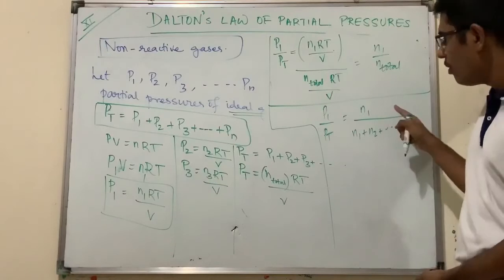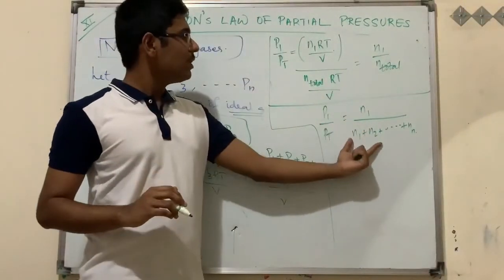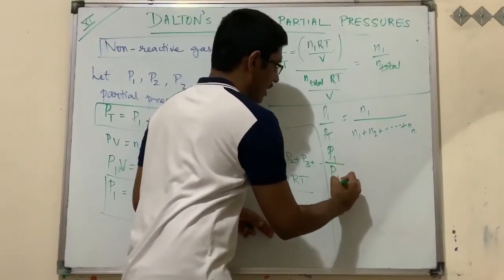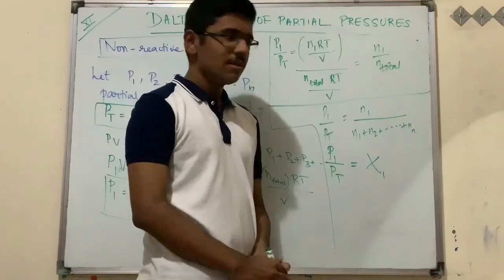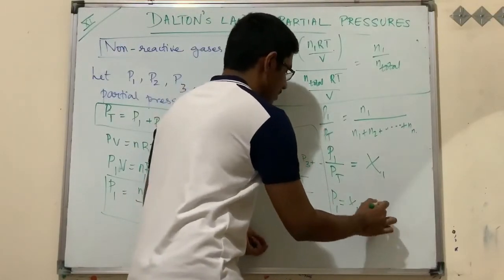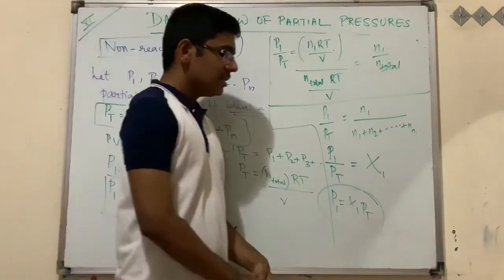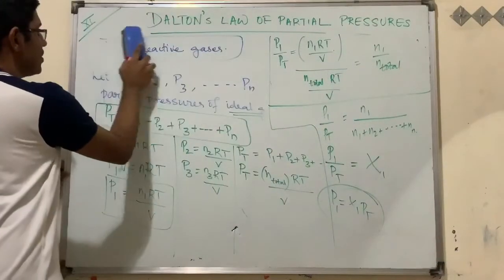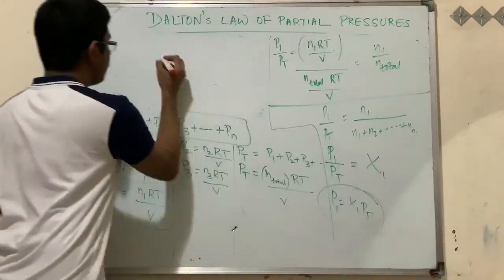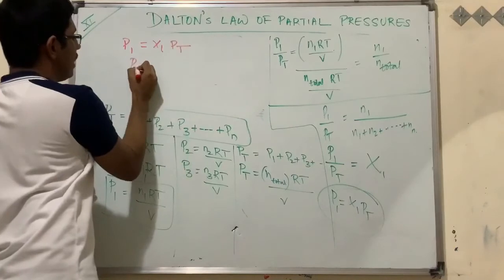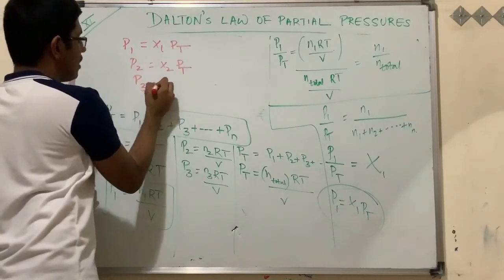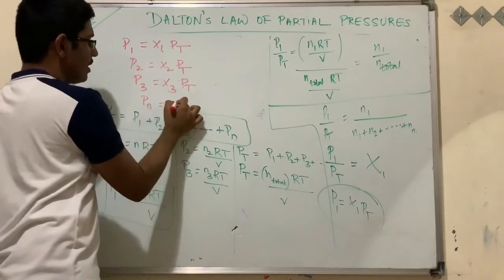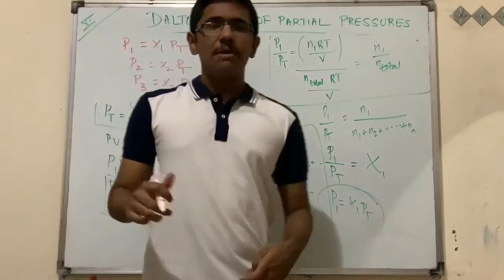Now, n1/n_total is exactly the mole fraction of the first gas, denoted χ1. So p1/P_total = χ1, which means p1 = χ1 · Pt. This is the required relation. In general: p1 = χ1·Pt, p2 = χ2·Pt, p3 = χ3·Pt, and pn = χn·Pt, where χ1, χ2, χ3 are the individual mole fractions.